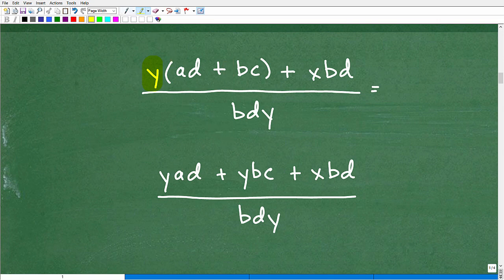So we have this y outside of this sum. So let's go ahead and take that y. We'll multiply it by both of those terms. So that's going to be yad plus y times bc, which is ybc, plus our xbd, all over this bdy. Now, at this point, you want to look and see, do you have any like terms? And then you want to add any respective like terms if you had them. But we don't have any like terms here.